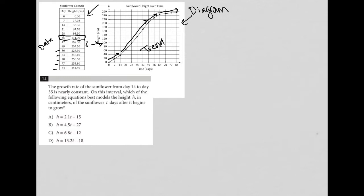Question 14 says the growth rate of the sunflower from day 14 to day 35 is nearly constant. So day 14, which is here, to day 35 - basically this set of data inside my rectangle.